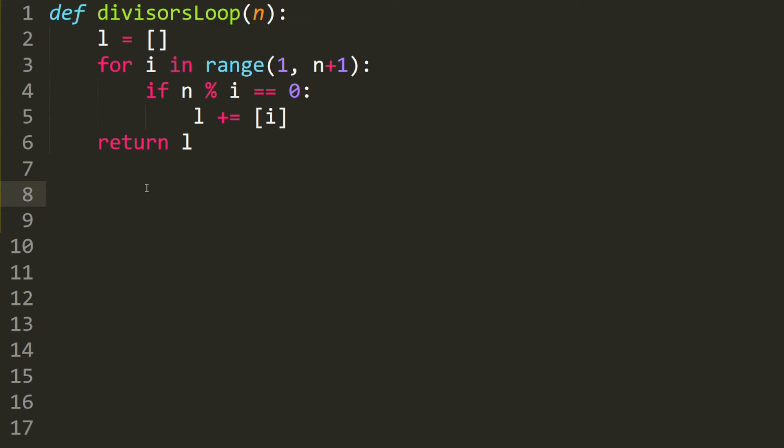Let's write the recursive solution. We define the divisors function and return divisors 2. And we start at 1. We go to n. And we have an empty list.